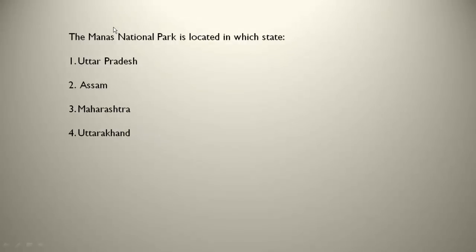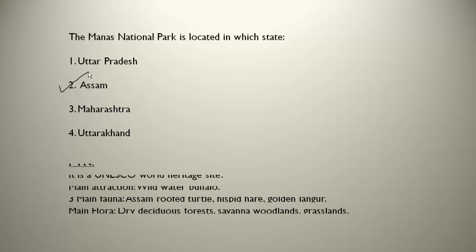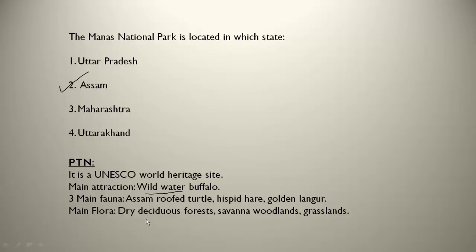The Manas National Park is located in which state? Manas National Park is also located in Assam. It is a UNESCO World Heritage Site. The main attraction is the wild water buffalo, which is found in large numbers here. The three main fauna are Assam roof turtle, hispid hare, and golden langur. The main flora are dry deciduous forest, savannah woodlands, and grasslands.